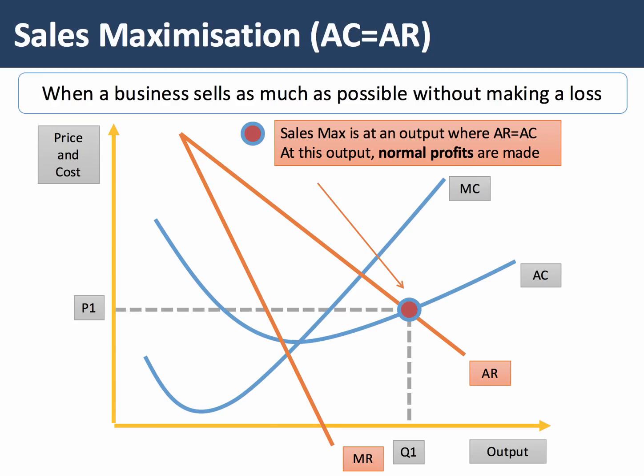An alternative is to go further — to drive sales and output — increasing production to a level where average cost equals average revenue, in other words when normal profits are being made. This is the sales maximisation output, when a business sells as much as possible without making a loss.